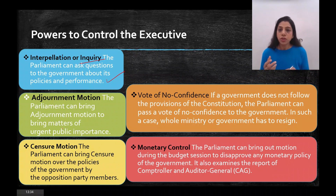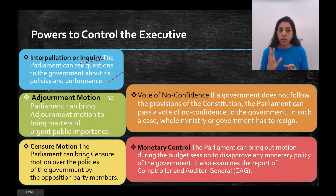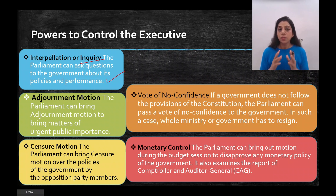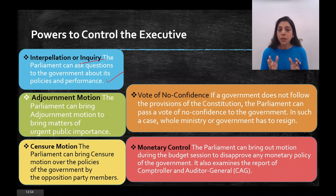The Parliament can also bring the Adjournment Motion to bring matters of urgent public importance to the floor. If there is a matter that needs to be urgently addressed publicly, the regular proceedings are set aside and discussion happens on that matter. At least 50 members need to support this Adjournment Motion.